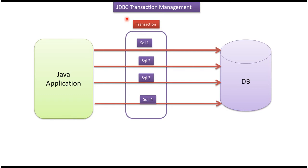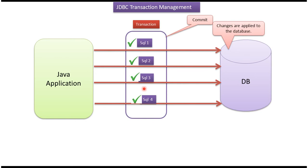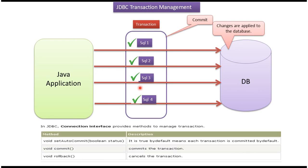In this video tutorial I will cover JDBC transaction management. Inside the transaction boundary we can execute more than one SQLs. If all SQLs are executed successfully then we can commit the changes in the database using the connection.commit method. Here you can see the connection interface has a commit method — using that we can commit the transaction.